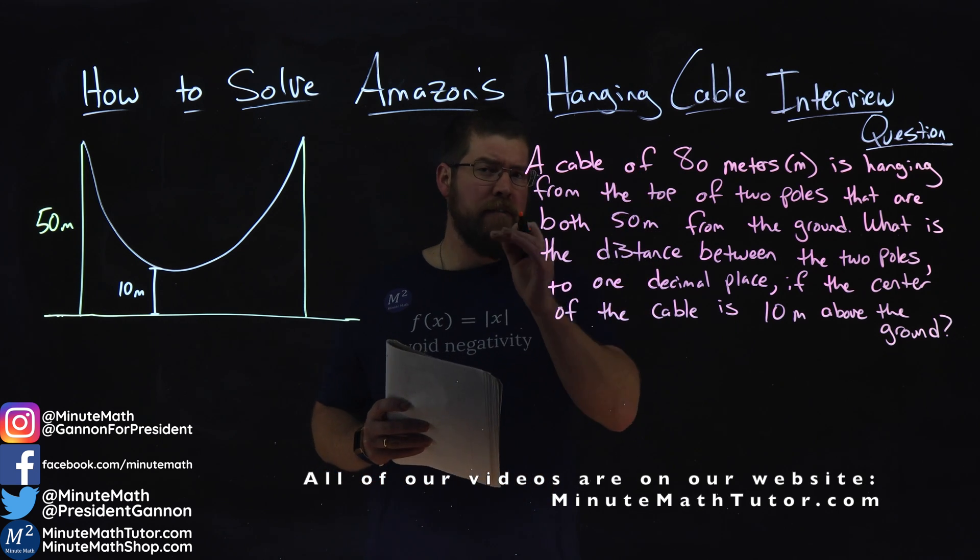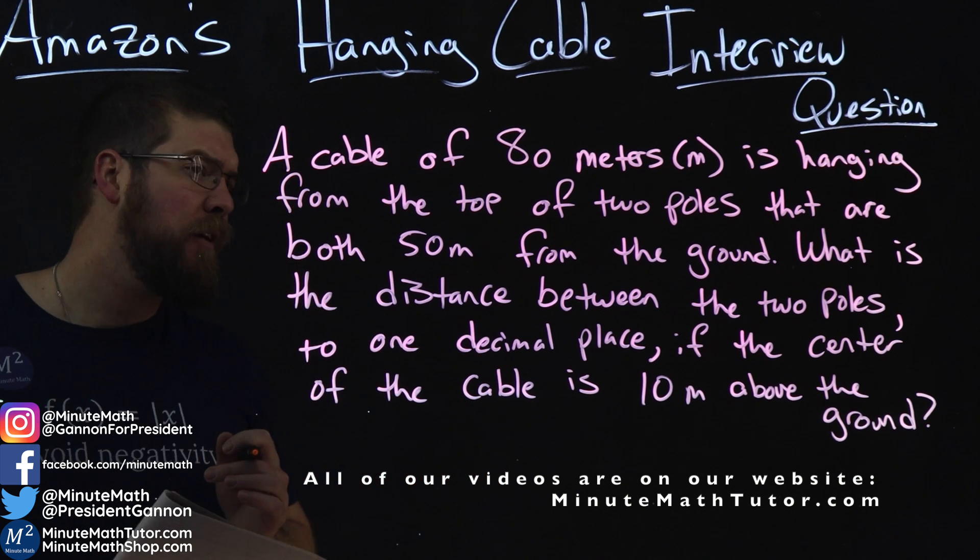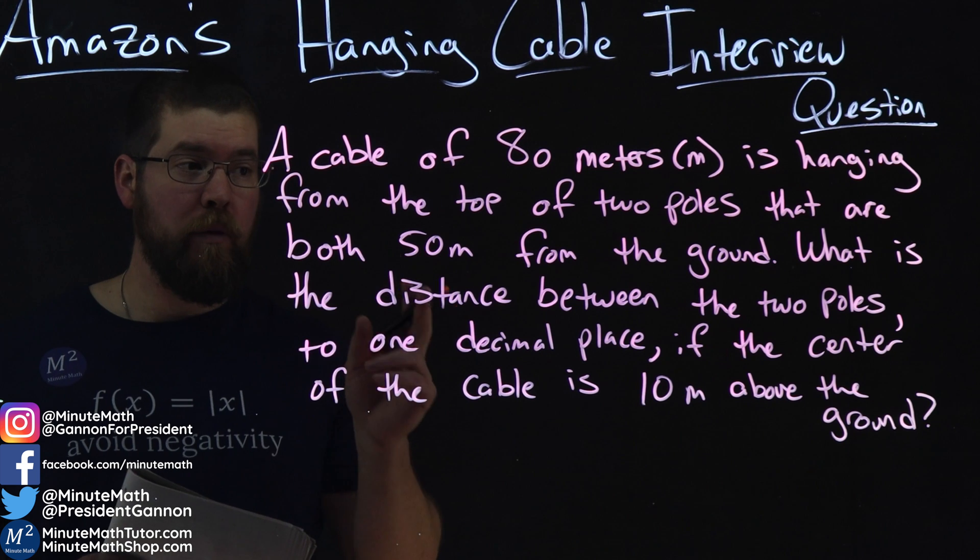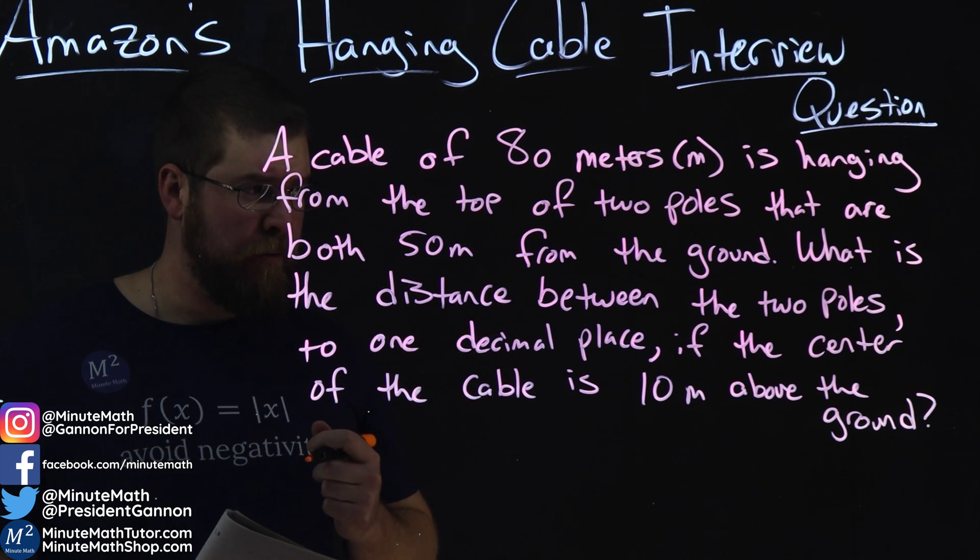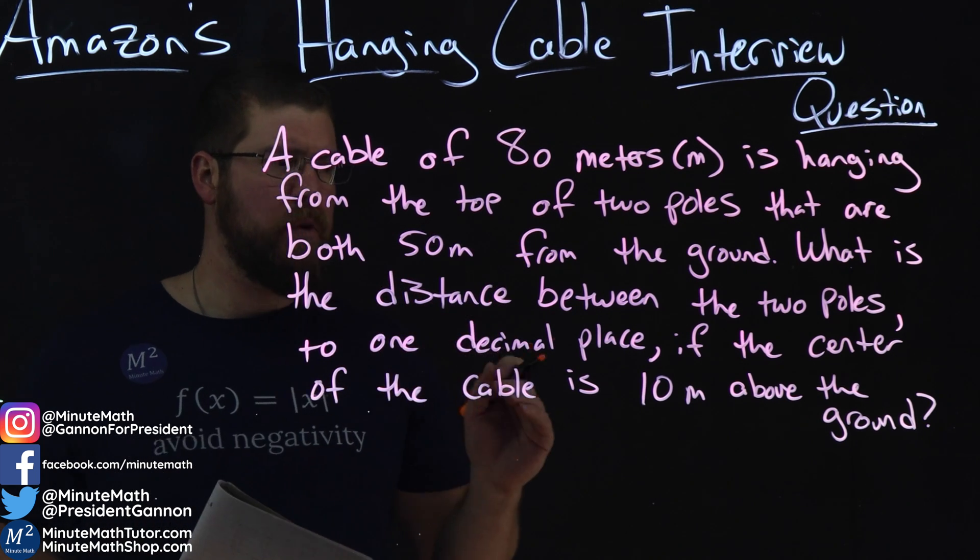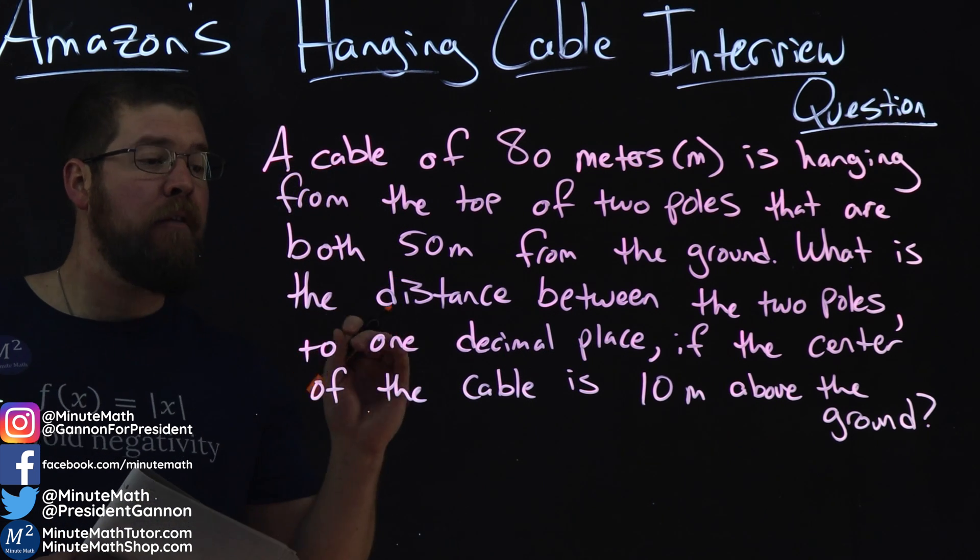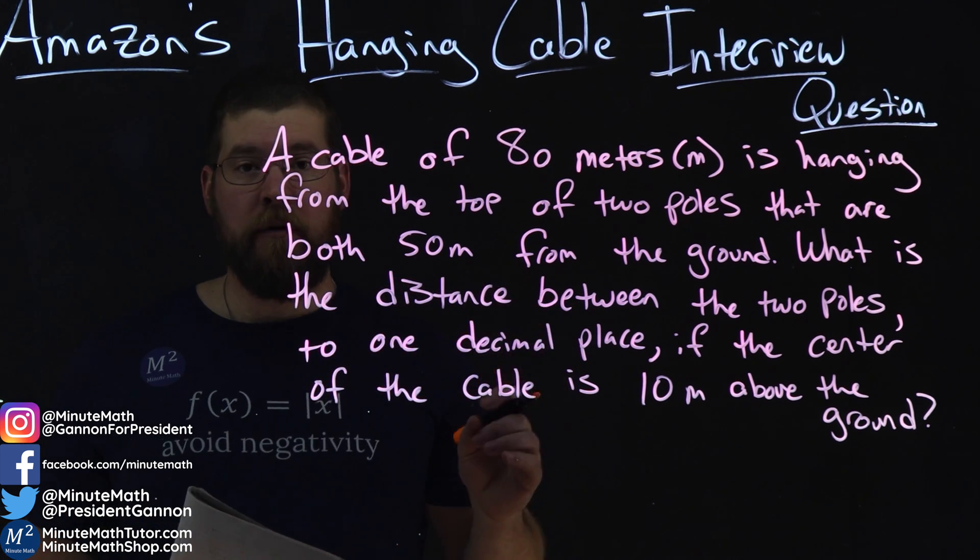This is a pretty famous problem. A cable of 80 meters is hanging from the top of two poles that are both 50 meters from the ground. What is the distance between the two poles to one decimal place if the center of the cable is 10 meters above the ground?